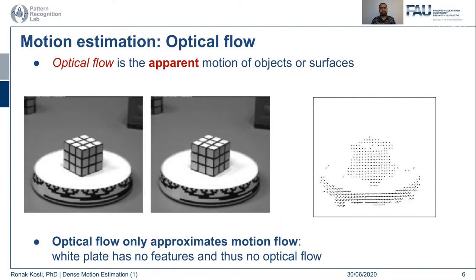Motion estimation can also interchangeably be called optical flow — these two terms are used in conjunction with one another, though there is a slight difference we'll look at later. Optical flow is essentially the apparent movement or motion of objects or surfaces across frames, generating vector fields showing how much a pixel moved from one image to the next. Here you can see a Rubik's cube lying on a white surface.